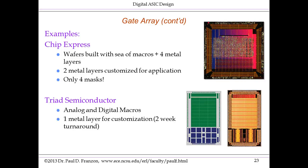This is a lot quicker and cheaper than doing the full mask set required for standard cell-based designs. Another company, local to North Carolina, is Triad Semiconductor. They only have one metal layer required for customization, and thus can turn around a chip — you can go from sending them a CAD file to having chips in your hand in only two weeks, because sets of pre-made wafers are sitting in the fabs these vendors use.